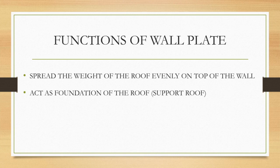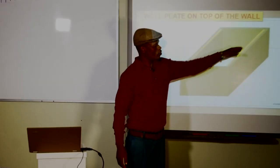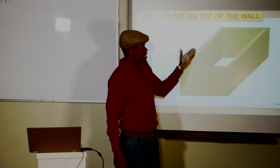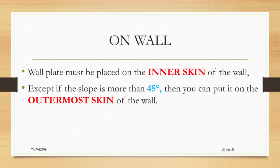The function of the wall plate is to spread the weight of the roof evenly on top of the wall, and it also acts as the foundation or base of the roof to support the roof trusses. The wall plate must be placed towards the inside part of the building, not towards the outside. We can only place the wall plate on the inner skin or inner part of the wall, but only if it is going to be more than 45 degrees.